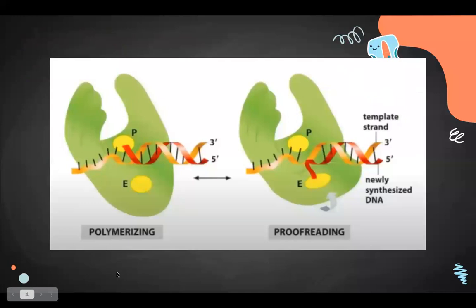To describe this further: the newly synthesized strand normally goes through the polymerase active site. If a mistake is found, it moves into the exonuclease site, which chews back that nucleotide, and then the strand moves back into the polymerase active site. This process goes back and forth whenever there is a mistake.